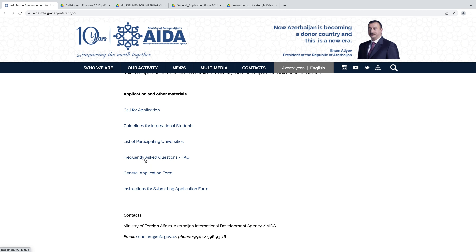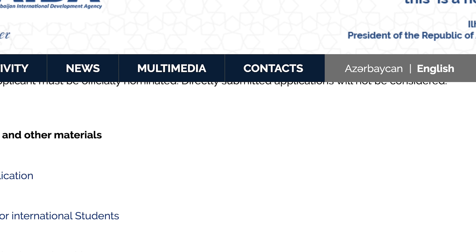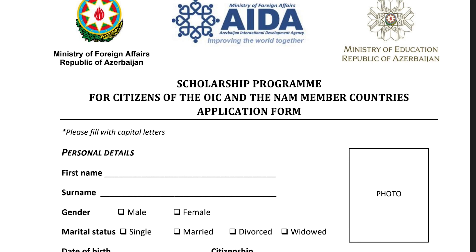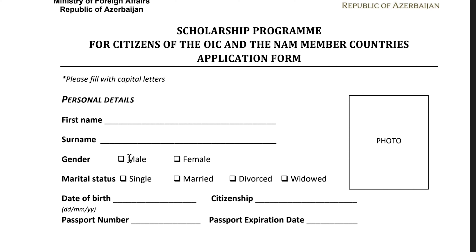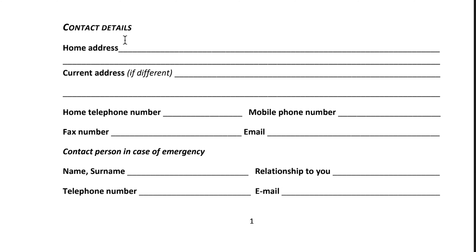From here you can also check frequently asked questions. Next is the general application form. In the application form, you first have to write your first name, surname, select your gender, marital status, date of birth, citizenship, passport number, and passport expiration date. Then provide your home address and front address if different; if both are the same, just give the home address. Then fill in home telephone number, mobile phone number, email, and fax.